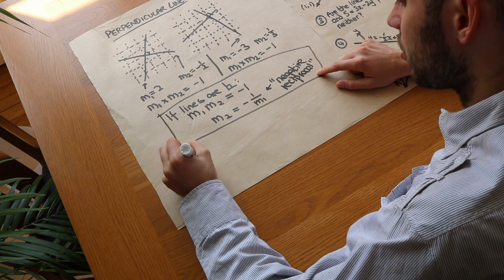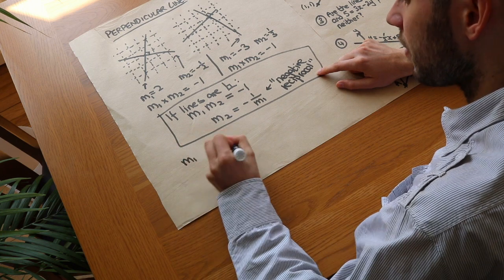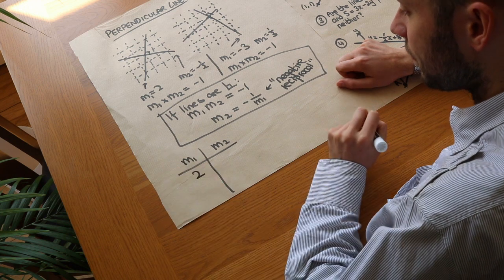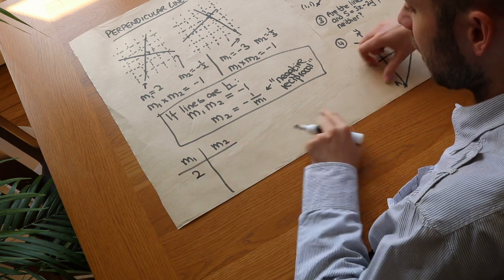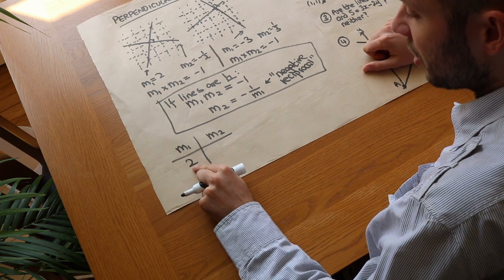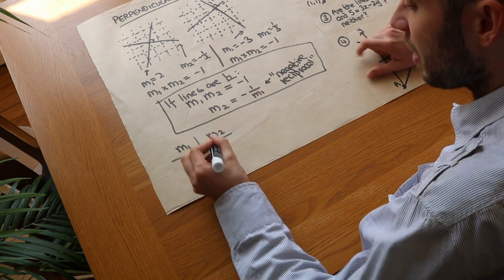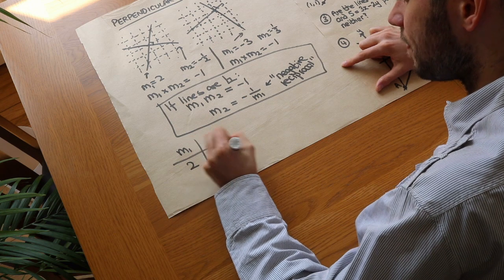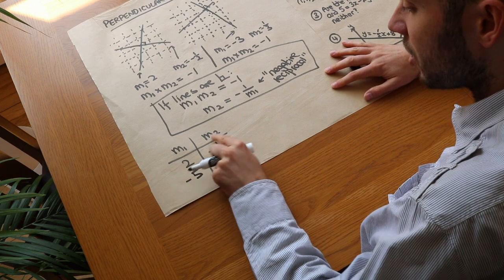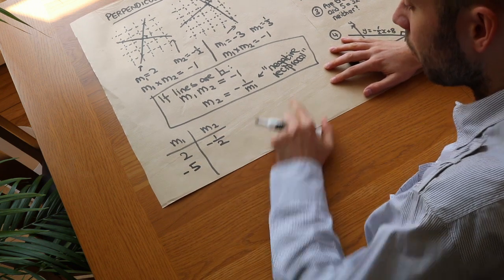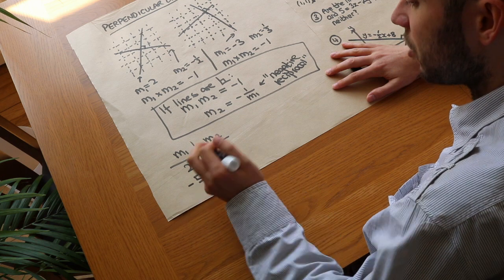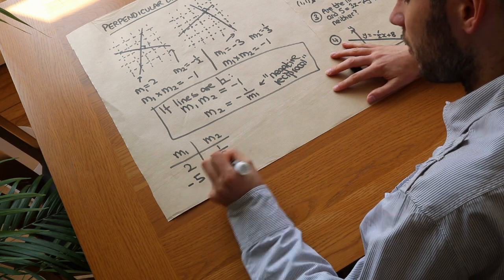Let's do some examples. We've got 2 perpendicular lines. If the gradient of the first is 2, what's the gradient of the second one? We do the negative reciprocal: negate it to get minus 2, then do 1 over it — so it's minus a half. If we had minus 5, what would be the gradient of the perpendicular line? We do the negative reciprocal: negate it to get positive 5, then do 1 over it — it's going to be 1 over 5.